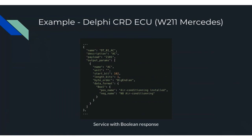Each payload sent to the ECU has a description and a hex string payload. Each payload has an optional output parameter section stating what's in the response message and how it will be presented to the user. For example, there is a parameter called AC with no units since it's not a number — it's one bit long starting at bit 102 within the response message, and the data format is boolean. With booleans you can optionally override the true and false matches — in this case, true indicates air conditioning is installed, and false indicates no air conditioning is installed.